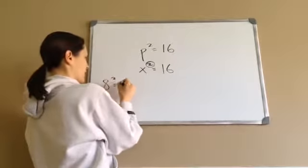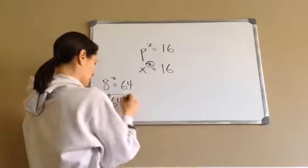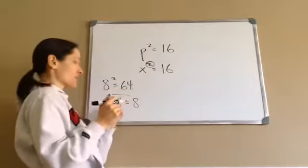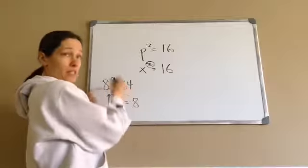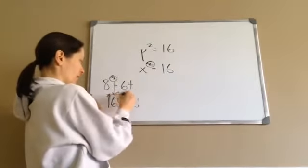8 squared is 64 and square root of 64 is 8. So these are opposites of each other. This is the opposite of that.